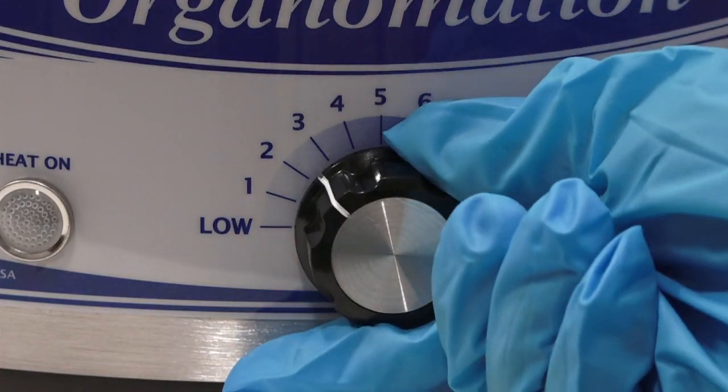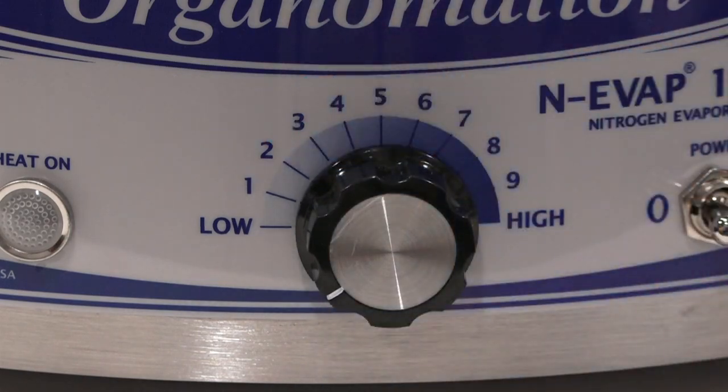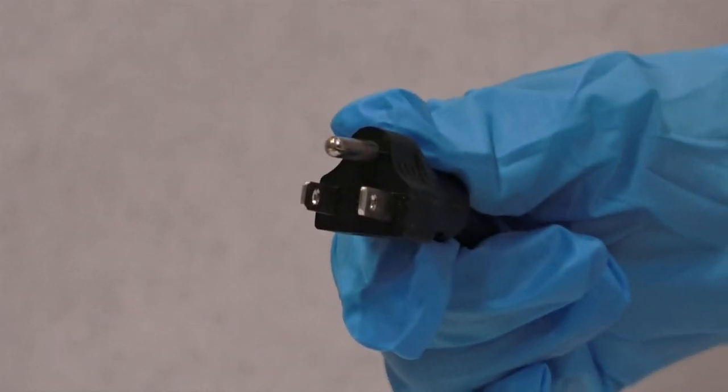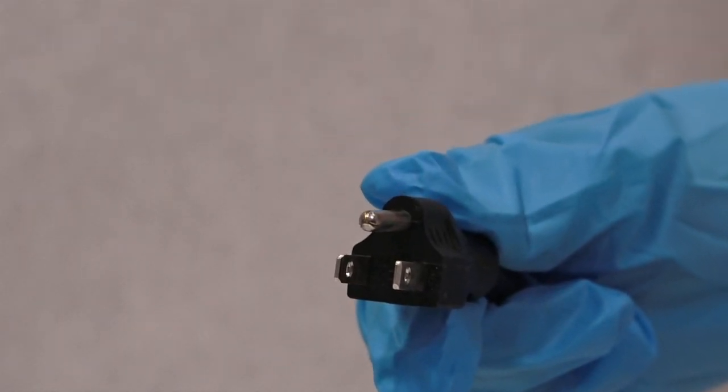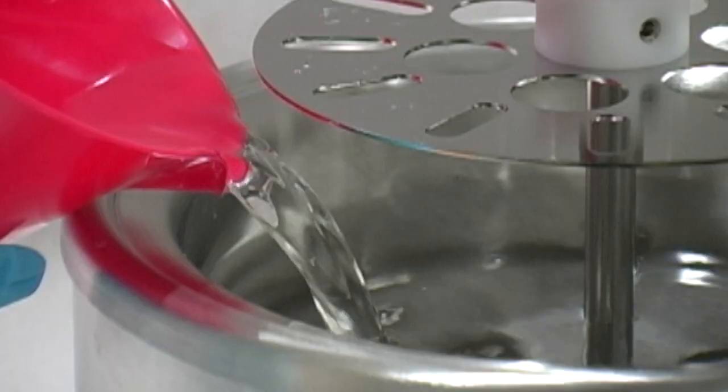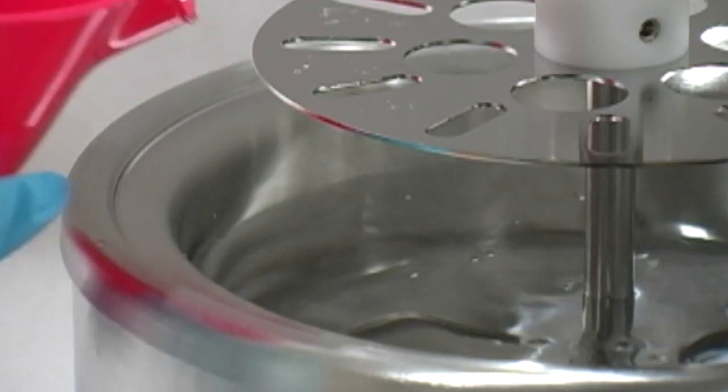Turn the bath thermostat knob to its lowest position. Plug the bath's electrical cord into a three wire grounded electrical outlet. Fill the bath with water to within a half an inch of the bathroom.